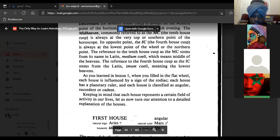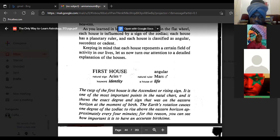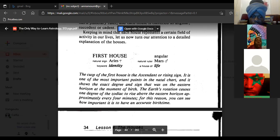Keep in mind that each house represents a certain field of activity in our lives. Let us now turn our attention to a detailed explanation of the houses. First house, natural sign Aries, keyword identity, natural ruler Mars, the house of life. The cusp of the first house is the ascendant or rising sign.